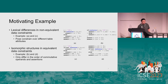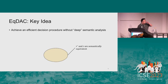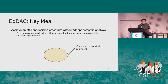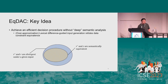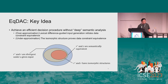Based on these two important observations, we can achieve a highly efficient decision procedure without very deep semantic analysis. We first leverage classical divergence to guide generation of inputs so the two data constraints have totally different behavior, achieving over-approximation of the equivalence relation. We then discover isomorphic structures underlying the data constraints to prove equivalence efficiently, achieving under-approximation. Although the original problem is NP-hard, we can handle a large amount of real-world instances in polynomial time.